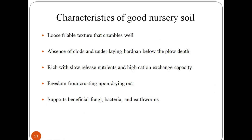Let us understand the qualities and characteristics of a good nursery soil. Soil management offers information to manage agricultural soil for optimum crop yield while maintaining and improving the capacity of soil to provide essential ecosystem functions. Soil delivers nutrients and water and gives plants structural support. Soil helps to control water moving over and through the surface of the earth. Soil can filter and decompose organic substances such as manure, agricultural chemicals, and other compounds that can pollute air and water. Good nursery soil supports beneficial fungi, bacteria, and earthworms, and is rich in slow-release nutrients with high cation exchange capacity.